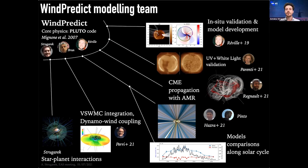With this model we have done many different things. We can do models of the solar wind and compare with UV and white-light observations, showing we do a good job at reproducing the structuring of the solar environment. We can do propagation of CMEs, and we have done many comparisons to ensure our model is robust. We have also applied this model to distant stars to study star-planet magnetic interaction.